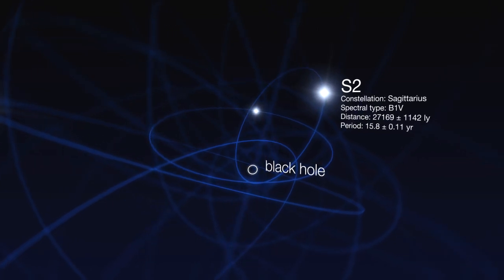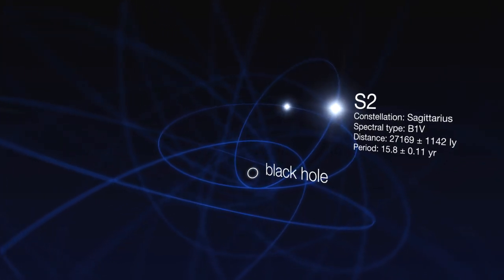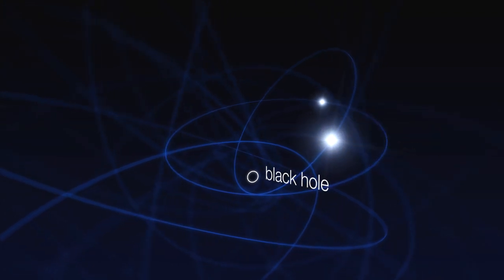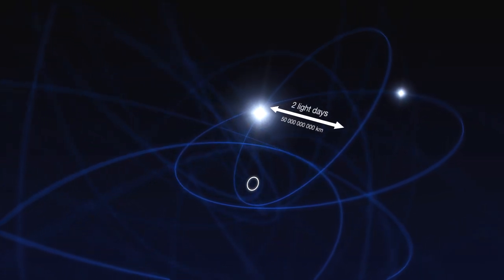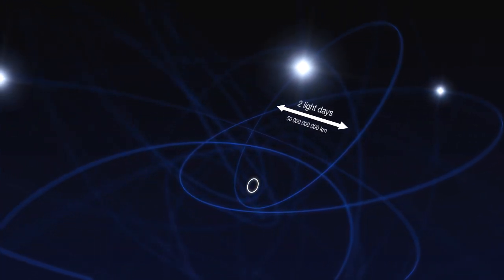For one of the stars, the astronomers were even able to follow it for a complete orbit. The star approached the central black hole to within just one light day. That's just five times the distance between Neptune and the Sun.